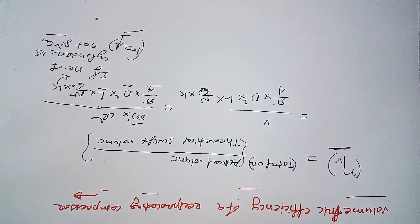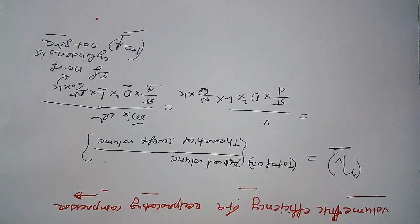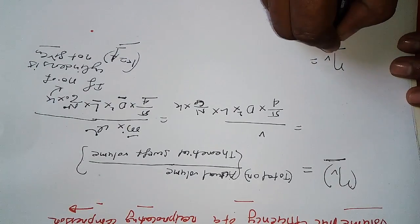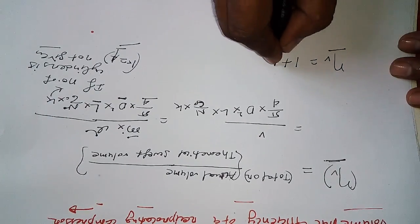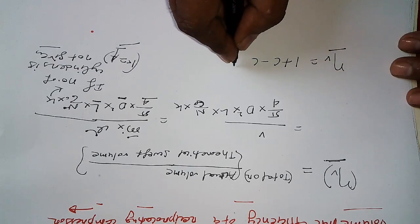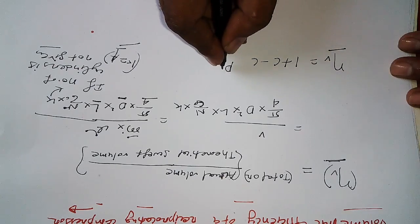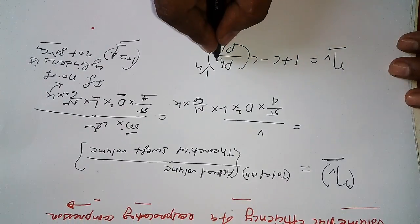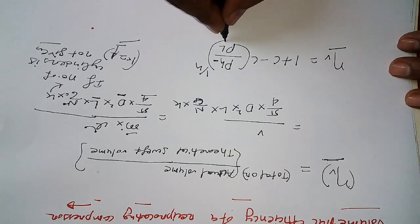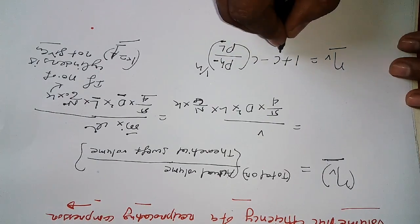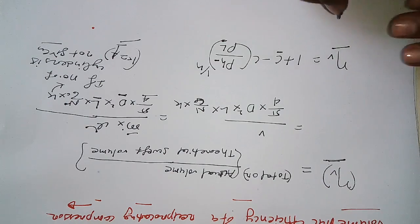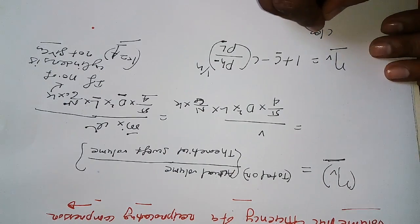Now let's move to another method. The second formula is: eta_V = 1 + C − C × (PH / PL)^(1/n), where n is the polytropic index. C is the clearance ratio — not compression ratio.